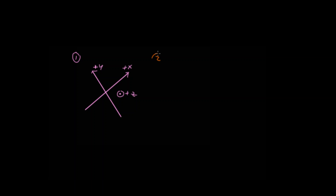Let's do a second example to hammer this home. Let's say you have a coordinate system and you made this the positive z-axis and this the positive y-axis. Now, which direction is the positive x-axis? Doing the right-hand rule, you get that it's out of the page. The positive x-axis in this problem is out of the page.